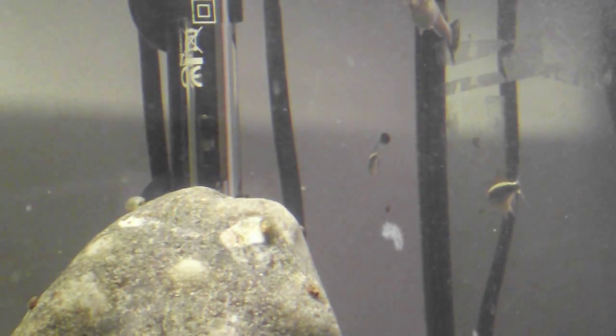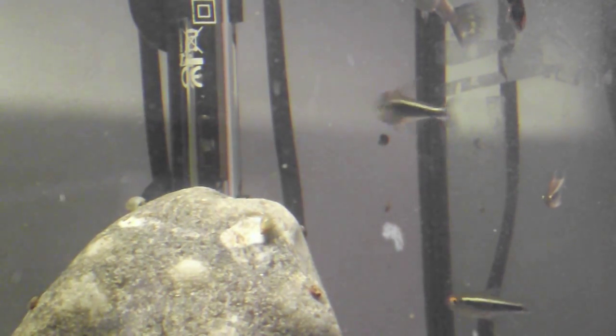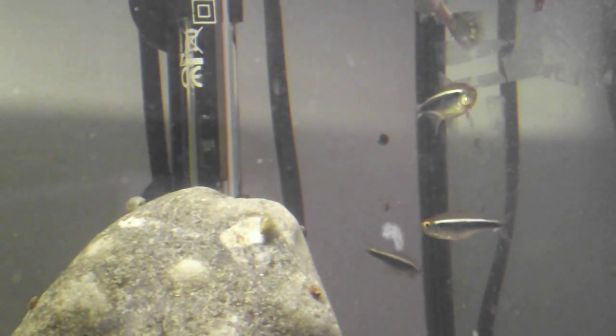They say the minimum size that you should keep a black neon tetra in is about 45 gallons. Nah, it's about 10 gallons or about 40 to 45 liters. It's not really fair keeping them cramped in a small little tank like 30 liters, because even though they're a small fish, they're a tetra and a tetra likes to swim a lot.